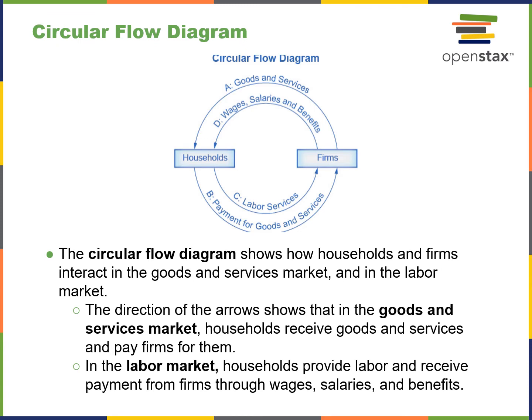There's a circular flow diagram — you might want to remember this for the test. Between households and firms, you have consumers and producers. Households are typically consumers; firms are typically producers. In the goods and services market, households receive goods and services and pay firms for them. In the labor market, households provide labor and receive payment from firms in the form of wages, salaries, and benefits.